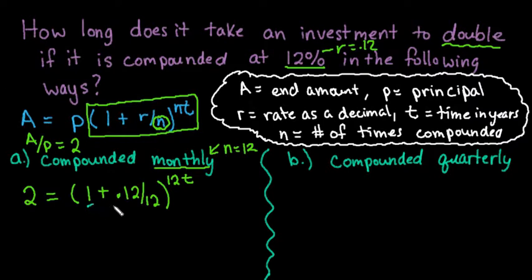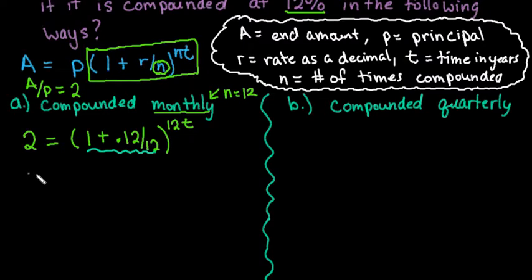I'm going to simplify this part inside here. When I do that, I end up with 1 plus 0.01, so this becomes 1.01. You don't have to simplify this - you could leave it as the expression and you'll get the same answer. It's just a matter of whatever is easier for you, to the 12t power.